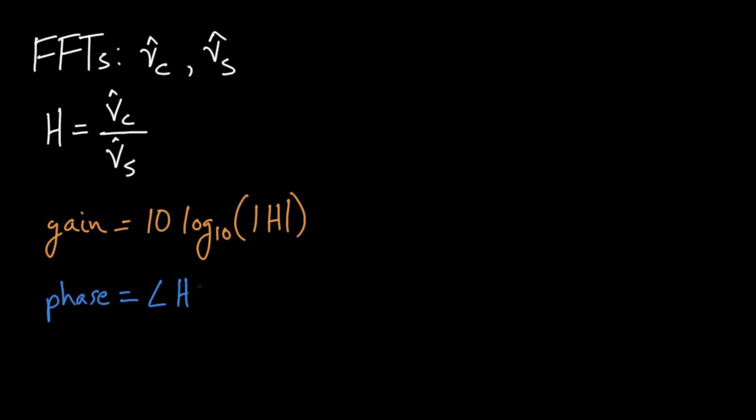If we take the ratio of the output Fourier transform to the input, we obtain the same result as the transfer function frequency response. If we compute the phase and gain of this ratio, we'll have the Bode plot phase and gain curves.